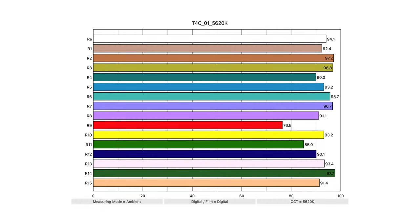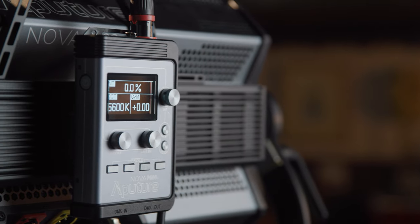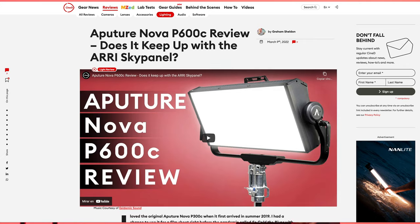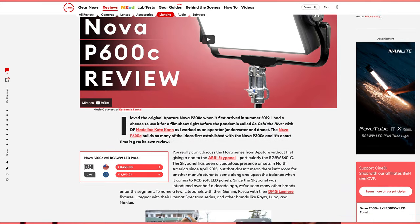Here's a quick look at how accurate the colors are coming out of the T4C. We're landing in the mid to lower 90s in terms of average CRI, with the exception of R9, red, and R11, green. These are decent results for our color rendering test, but notably not as good as for the Nova P600C. You can find the Nova P600C testing results in my online CineD review. The CRI results were identical with the T2C, and I saw a 40% hit to output with the 2 foot version when compared to the 4 foot version.